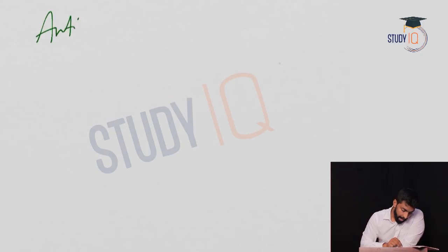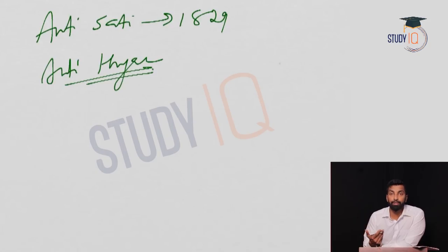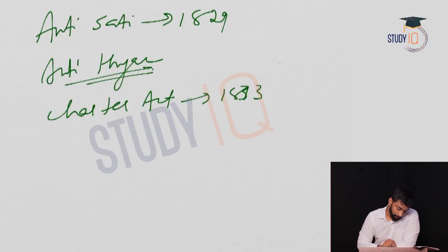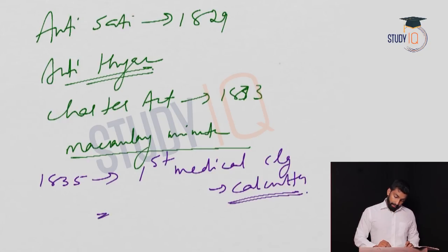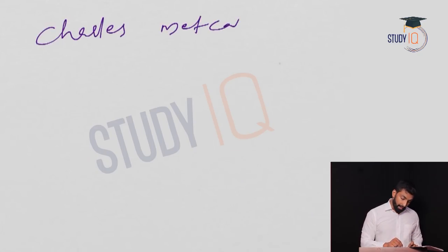Summary of Lord William Bentinck's period: Anti-Sati Resolution (1829), Anti-Thugi Law, Charter Act of 1833, Macaulay Minute (trickle-down/downward filtration theory), first medical college set up at Calcutta in 1835, and the first tea garden was also established — all during Lord William Bentinck's tenure, making him one of the most important governor-generals.